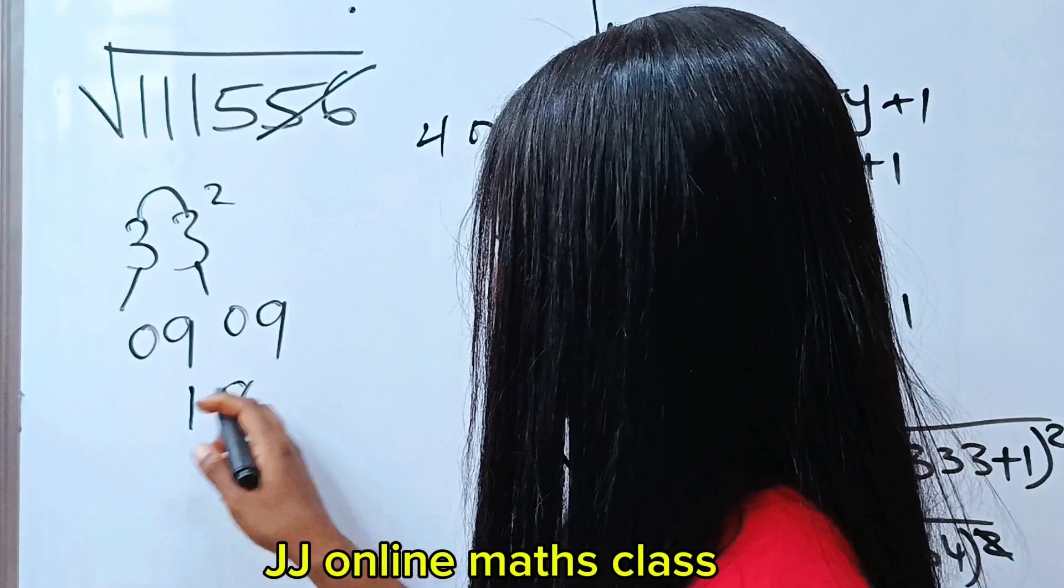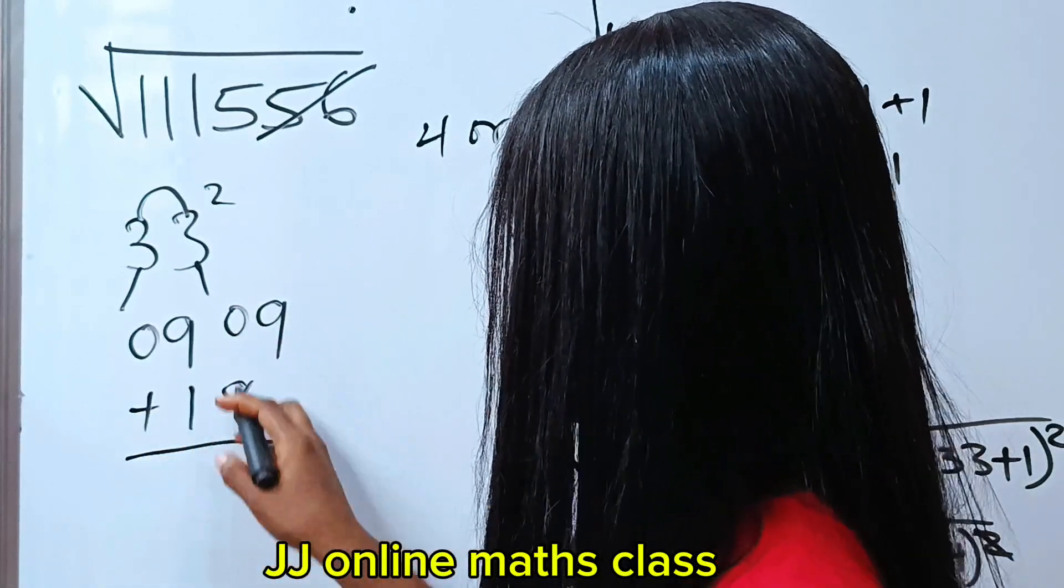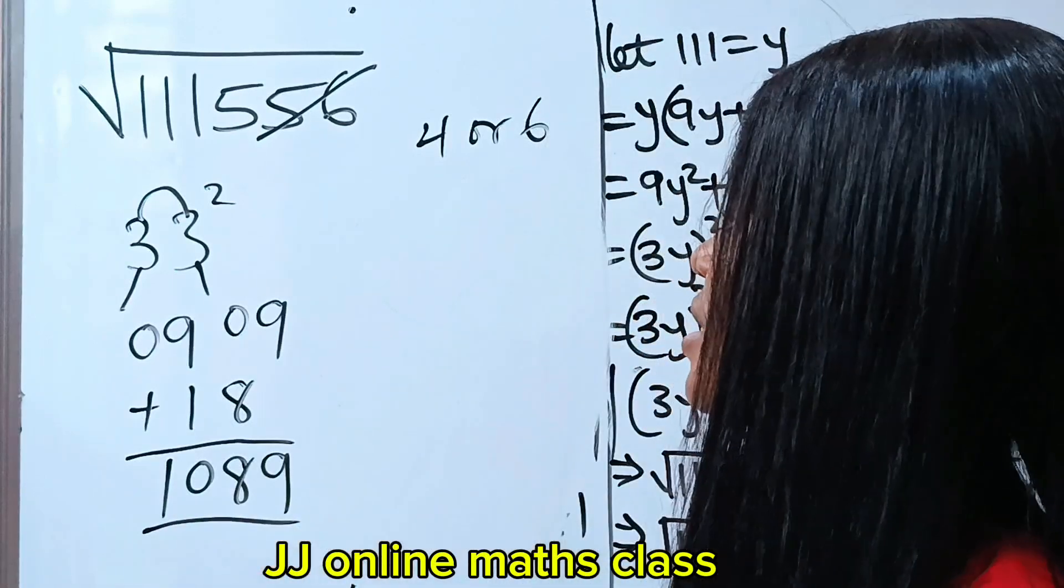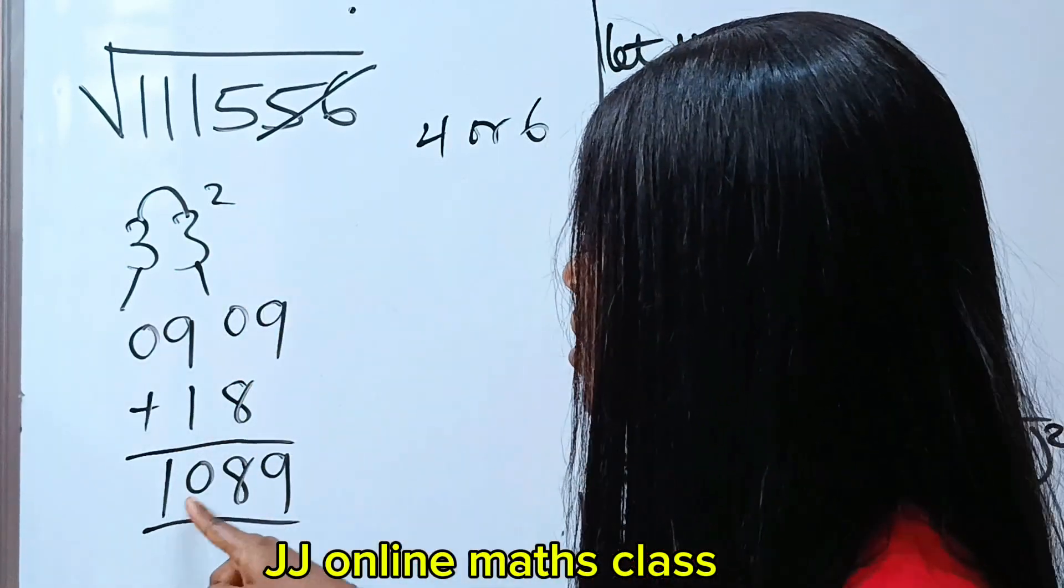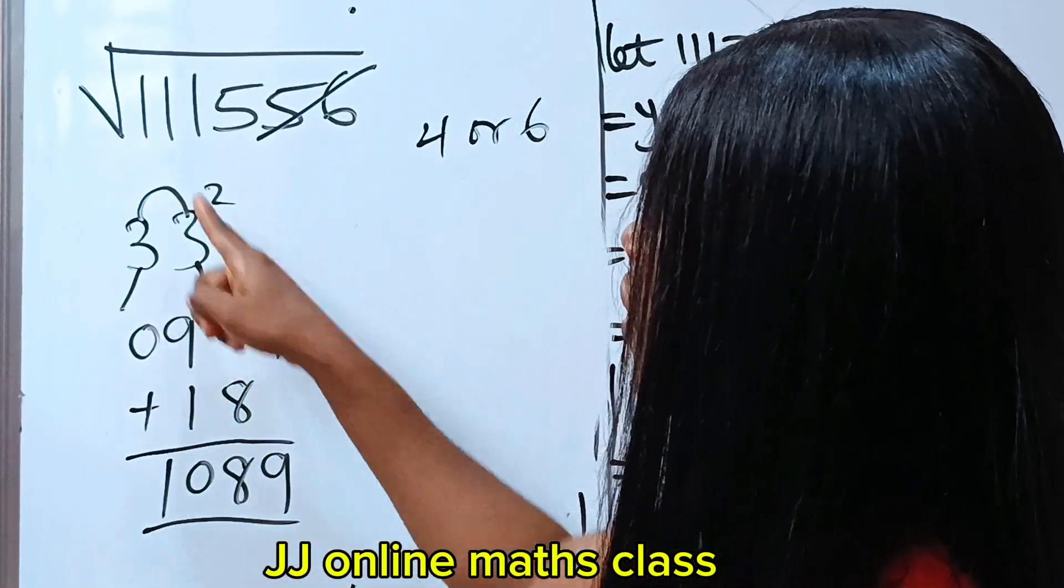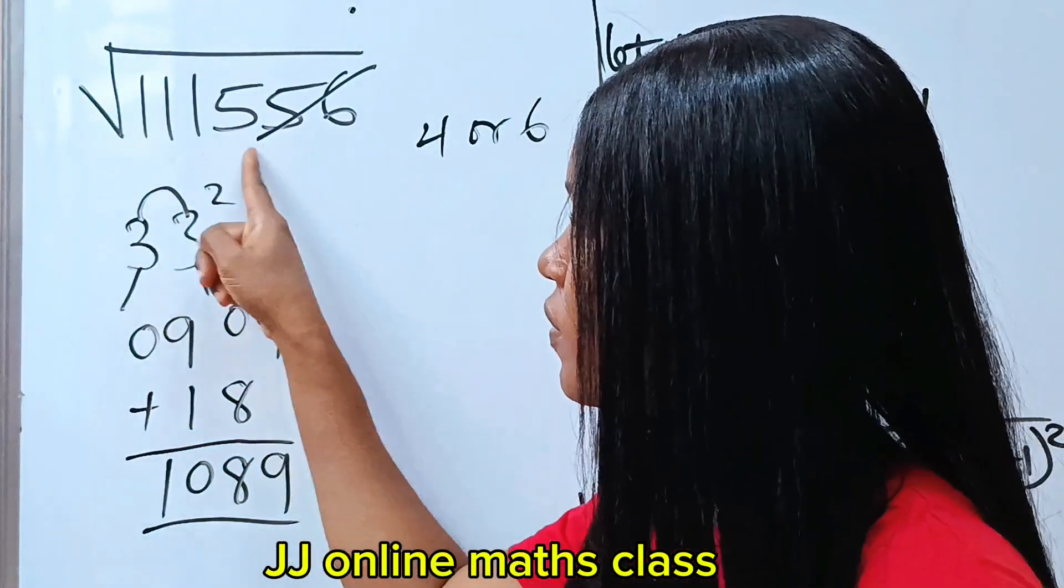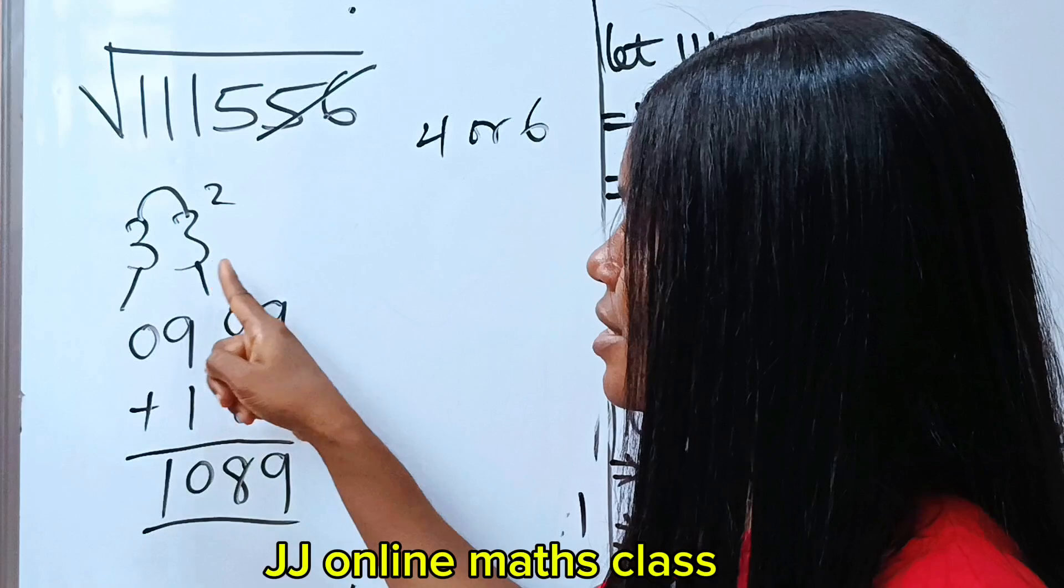I am going to add it here. Then, I am going to bring this down, bring this down 8, bring this as 10. So, this simply means that 33 squared will give us 1089, which is very close to 1115. If you pick 34, you are going to get a number that is above this. So, definitely, it is 33.